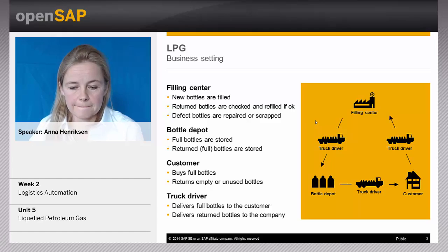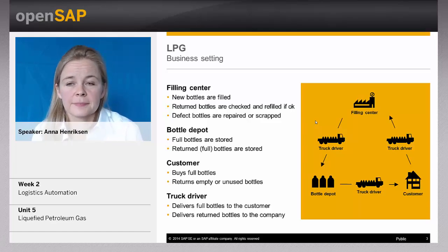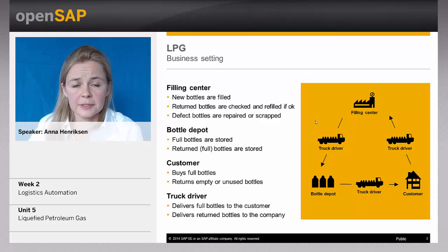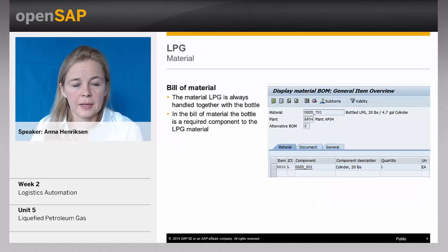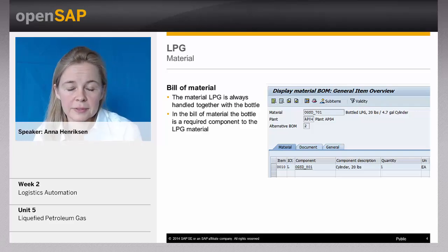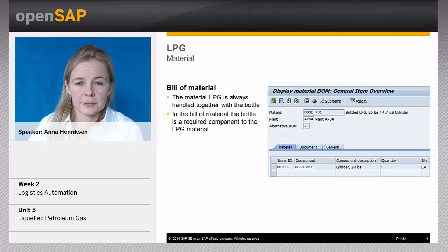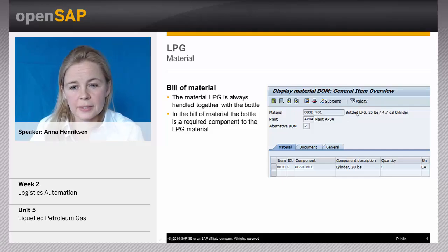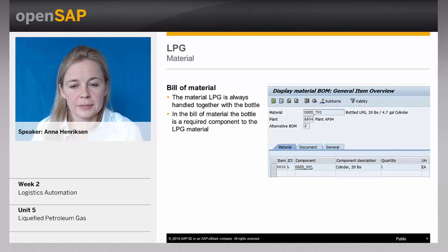Now let's look at the master data. The customer is set up with normal SD master data, and the filling center and the bottle depot are normal plants — so we're using SD master data and MM master data. The LPG specifics come when we look at the material. The material LPG always needs to be handled together with the bottle. For this we use standard SAP — we use the bill of material. We have the material called OTSD 701, which is the bottle LPG, and down here we have the bottle or cylinder that belongs to this material. Every time we enter this material, the system knows this cylinder must come with it.